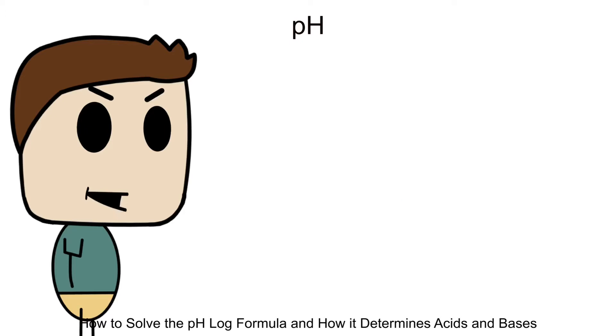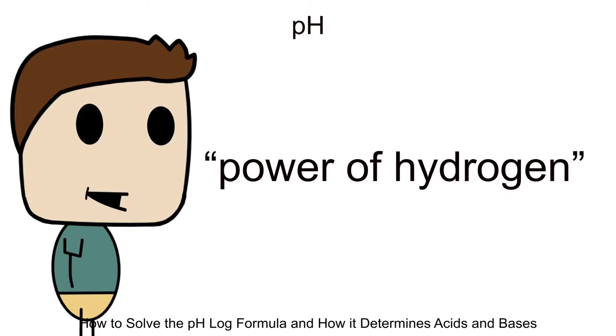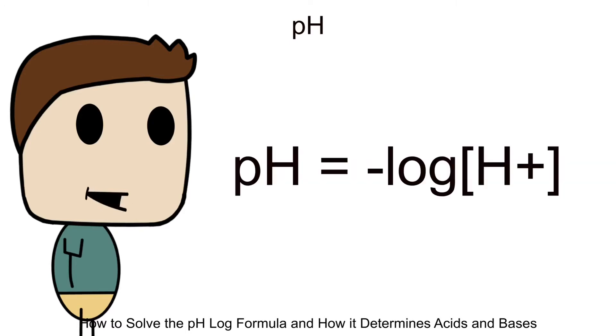pH is a concept that simplifies how we measure if a solution is acidic or basic. If someone didn't invent the pH, we would instead be working with raw hydrogen ion concentration numbers, meaning lots of zeros. So pH stands for the power of hydrogen, and it has its own formula based on if you know the concentration of hydrogen ions or the pH number.